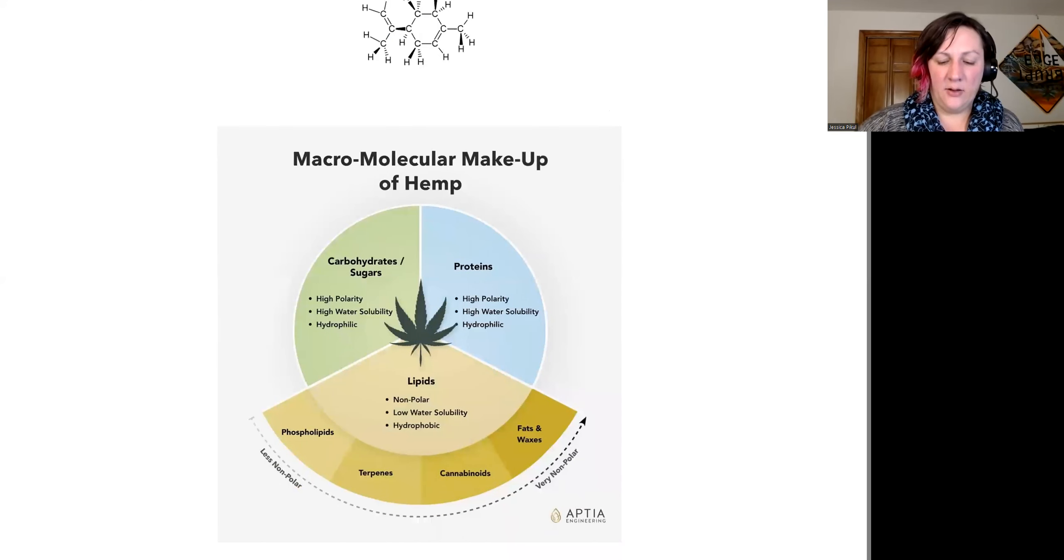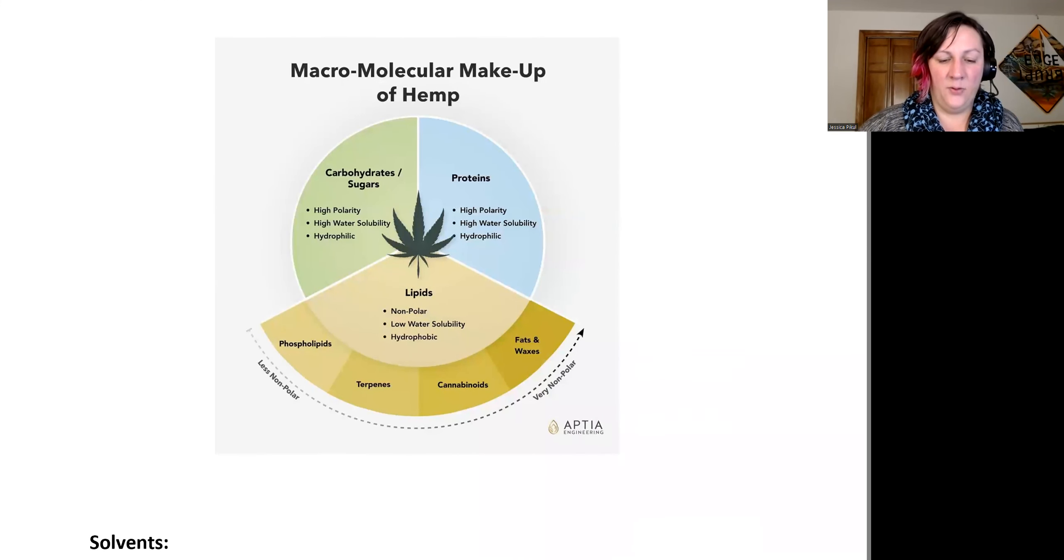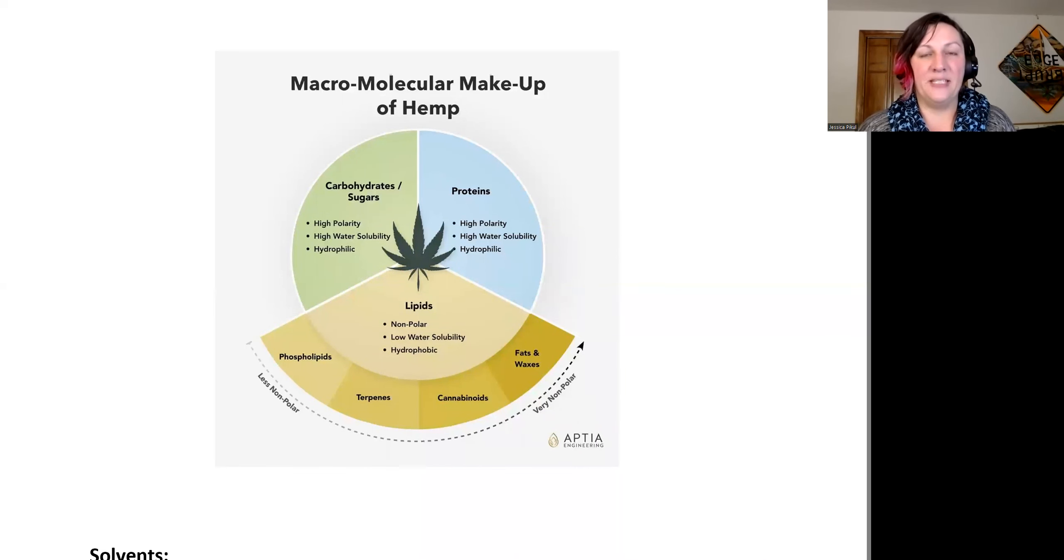I found this graphic from APETA that I think is helpful when thinking about the different types of macromolecules—which just means big molecules—that are actually in the hemp plant. We have carbohydrates and sugars within the cells, and they are very water-soluble and very polar. They have lots of OH bonds to do lots of hydrogen bonding. And we have proteins, which are huge—they're gigantic with really large molecular weights. They're usually very polar too, and they have a very high water solubility.